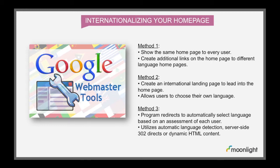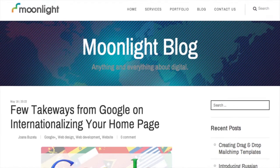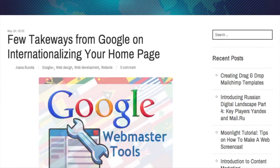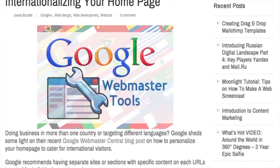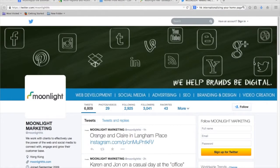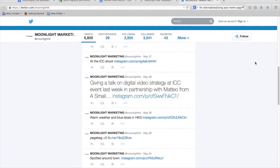In summary, the three recommended methods for designing international homepages are: showing every user the same homepage content and then offering alternate language sites; creating an international landing page that allows users to select their own language site; and programming automatic redirect algorithms that decide what language will be most appropriate for the user. For more information, visit our full blog post at MoonlightHK.com/blog, or start a conversation with us at Twitter.com/MoonlightHK. Thanks for watching.